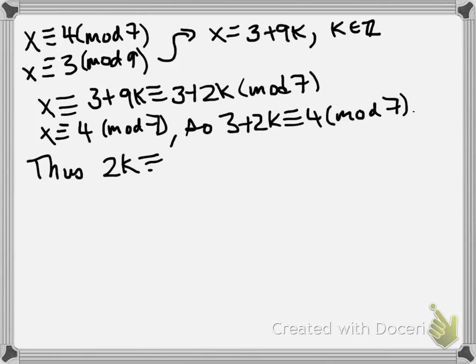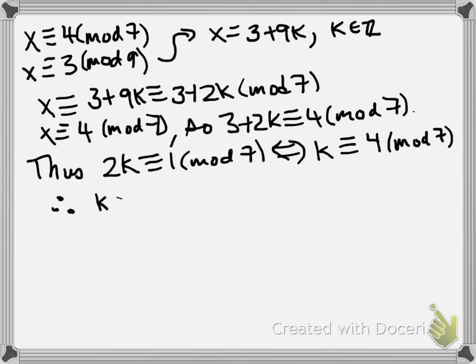So 3 plus 2k has to be congruent to 4 mod 7. But that means that 2k is congruent to 1 mod 7, and since 4 is the inverse of 2 mod 7, that says that k has to be congruent to 4 mod 7. In terms of integers, that says k is equal to 4 plus 7m, where m is some integer.